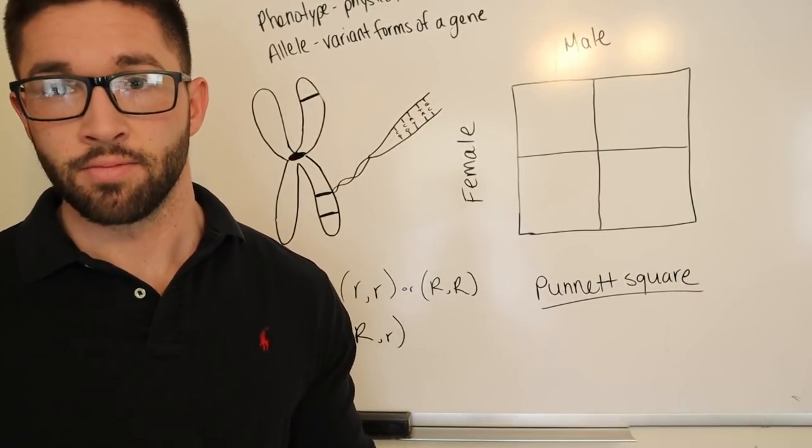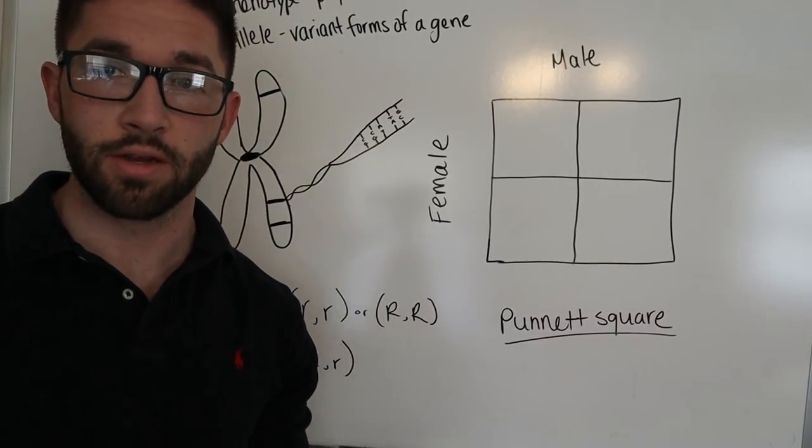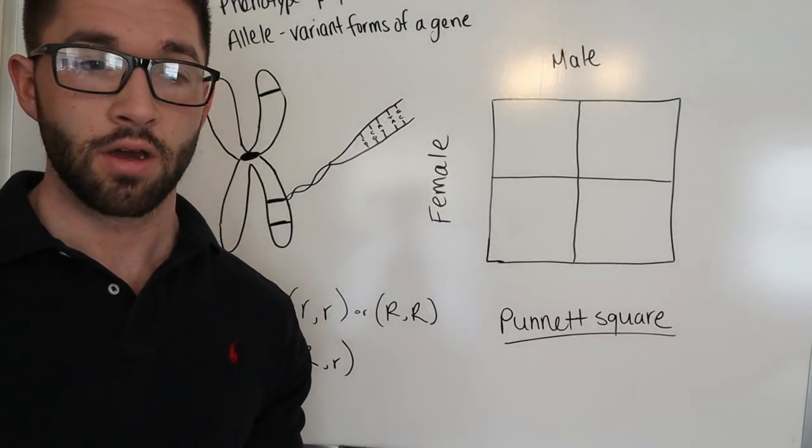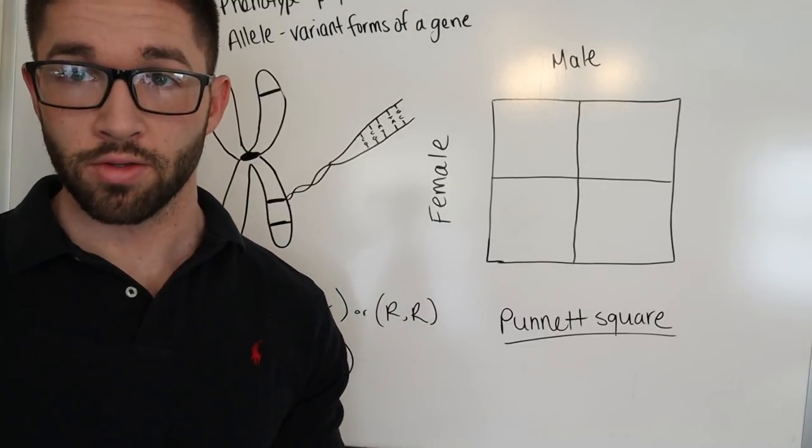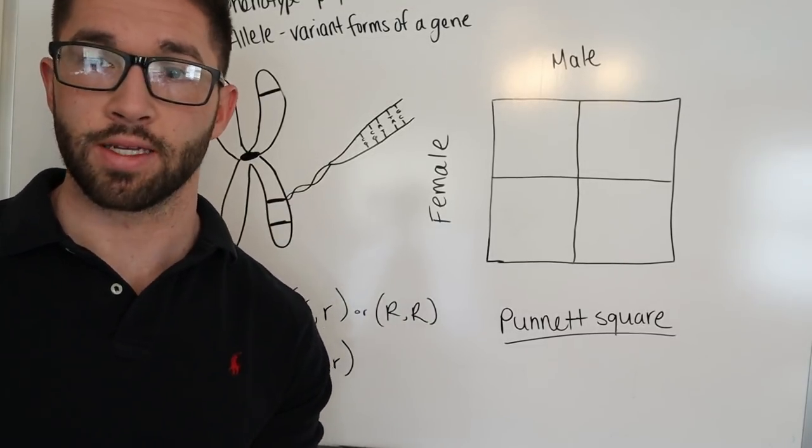But the genotype is actually the genetic makeup that the organism is, something that you can't see. So the next term to go over is allele, and that's just a different form of the same gene.